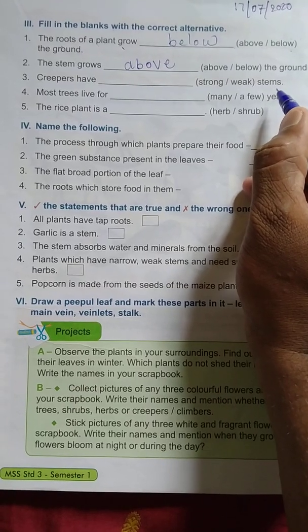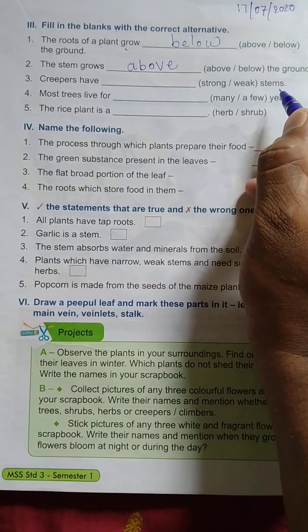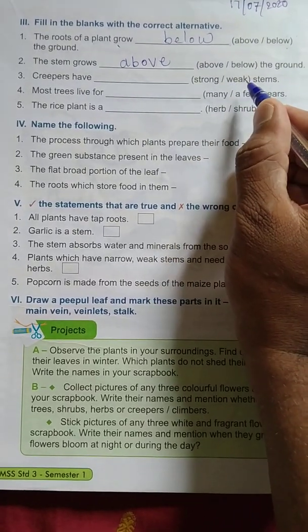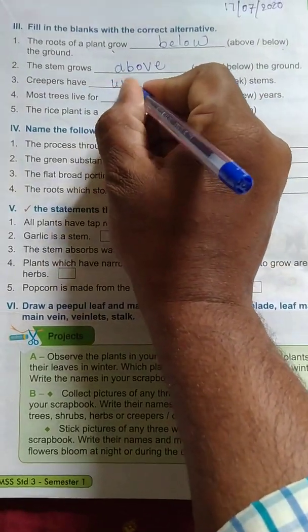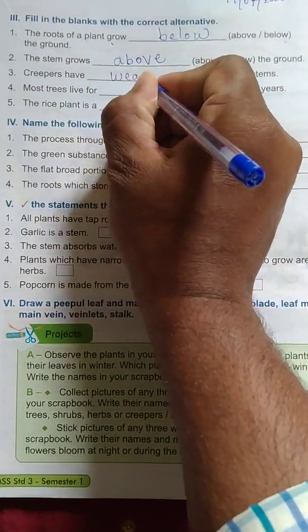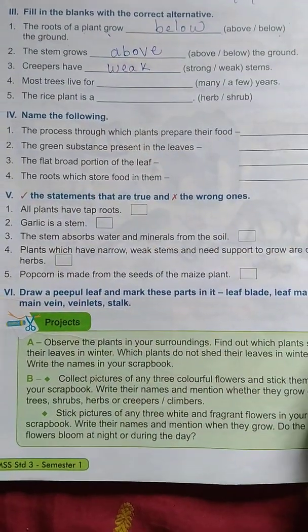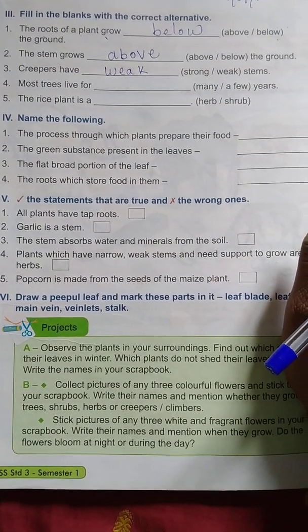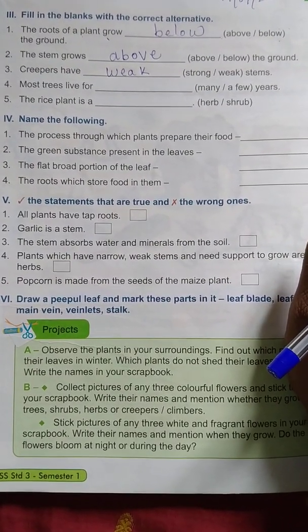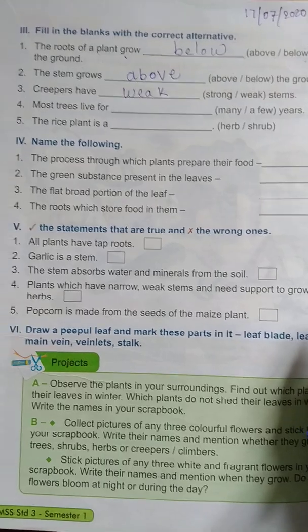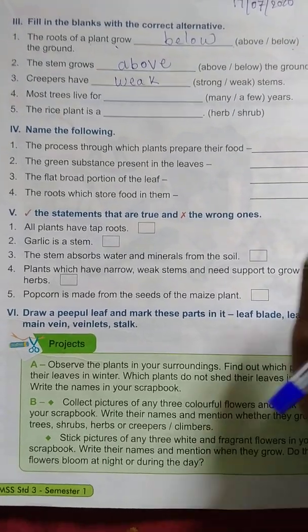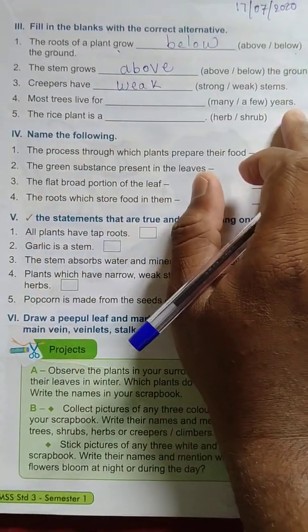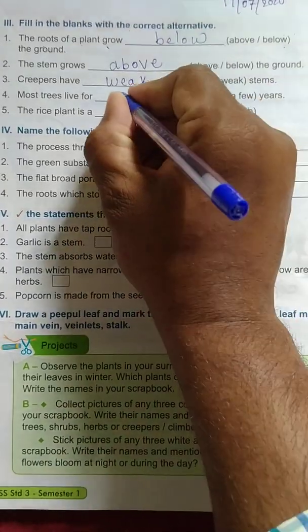Creepers have a weak stem, not a strong stem. Trees have only strong stems. And the next one: most trees live for dash years.